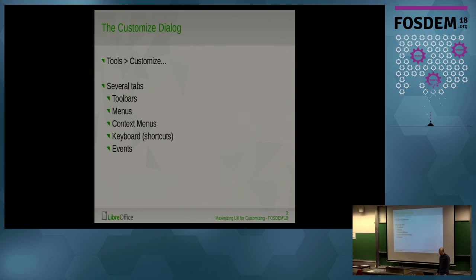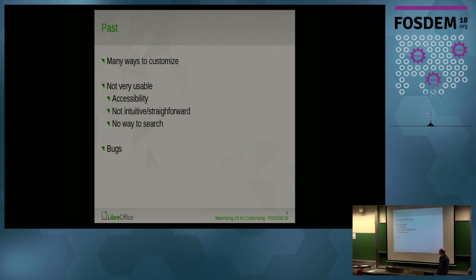Now, the customize dialog. You can open it through the Tools and Customize menu. There are several tabs in the dialog: toolbars, menus, context menus, keyboard, and events. It allows you to customize different aspects of LibreOffice based on your needs. In the past, there were many ways to customize LibreOffice in this dialog — it could be called feature complete — but it was not very useful. There were accessibility issues, it wasn't intuitive and straightforward, there was no way to search for what you are looking for, and there were also some bugs.